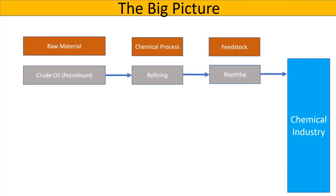Let's start by looking at raw materials and feedstock to the chemical industry. Let's look at four different raw materials. The first one is crude oil, or petroleum. A product of the refinery process is naphtha, which is widely used as a feedstock in the chemical industry.